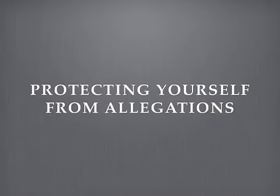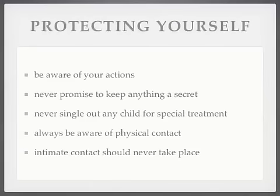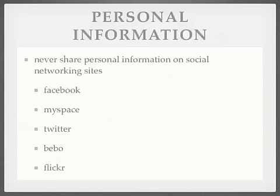We will now explore the importance of protecting yourself from allegations. Always be aware of your actions when working with children and think about how your actions or what you say could be interpreted. You should never promise to keep anything secret — this could suggest a special relationship or suggest to a child that you may keep secret any abuse they disclose to you. You should never single out any child for special treatment. Always be aware of physical contact, and intimate contact should never take place. You should never share personal information with young people, whether that be your mobile phone number or your home address. You should also think about social networking sites — you should never accept friend requests or personal messages, and always ensure your profile is kept private.